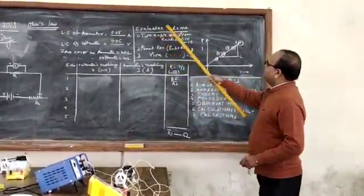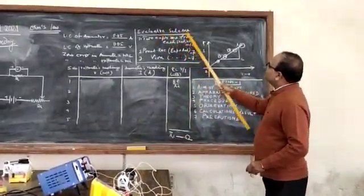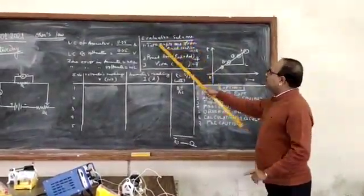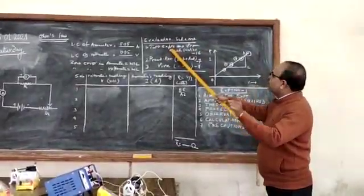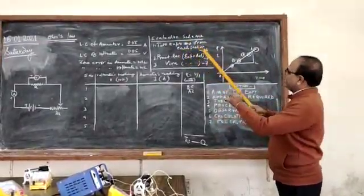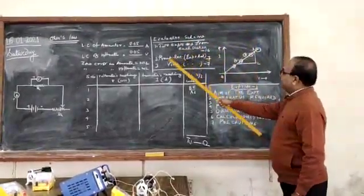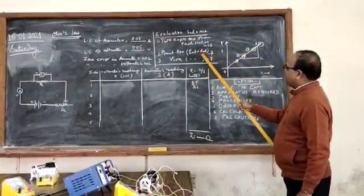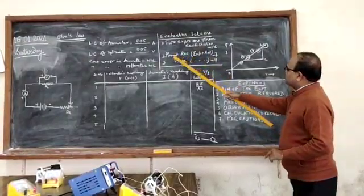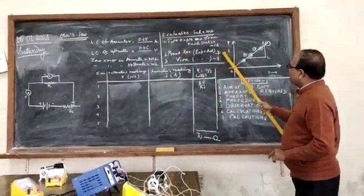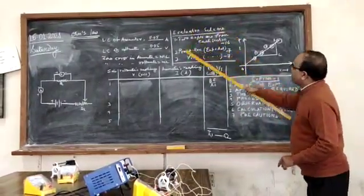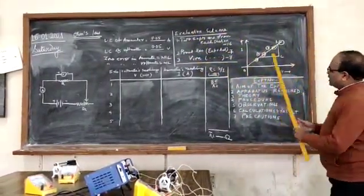You must know the evaluation scheme for this year's board exam. Two experiments you have to perform — one from electricity and another from optics, one from each section. The practical record is 7 marks and Viva is also 7 marks. This is regarding the evaluation scheme, so that is the written work I have explained to you.